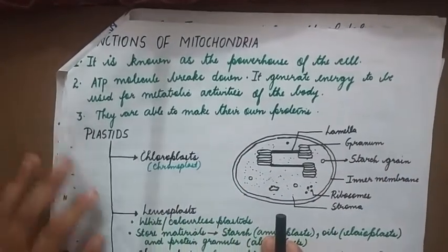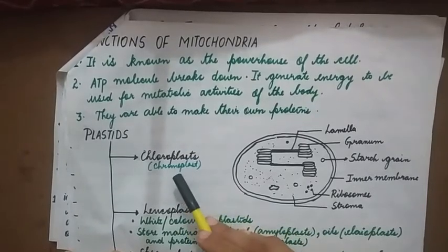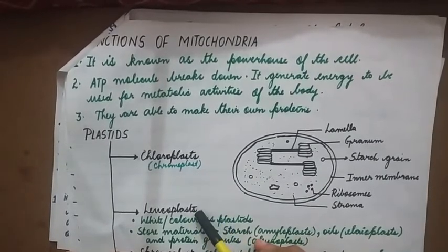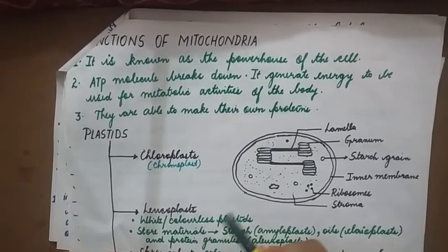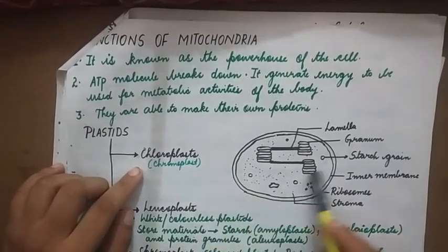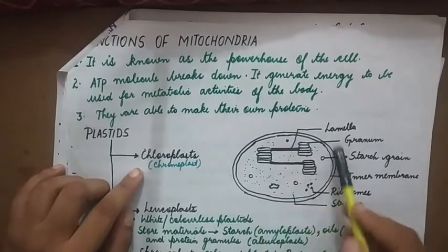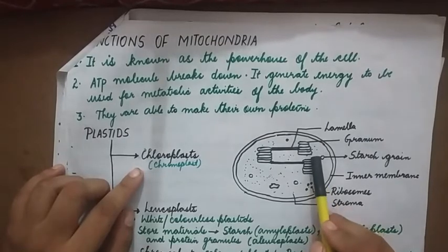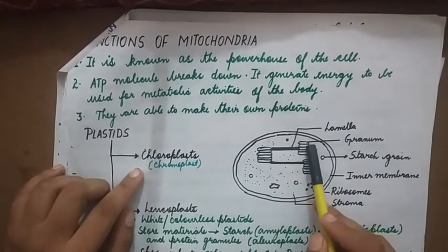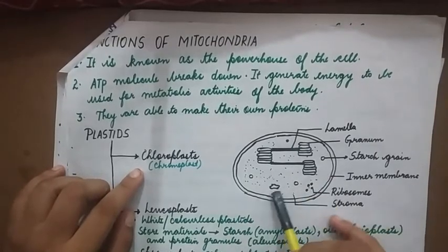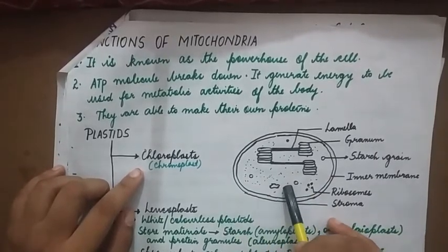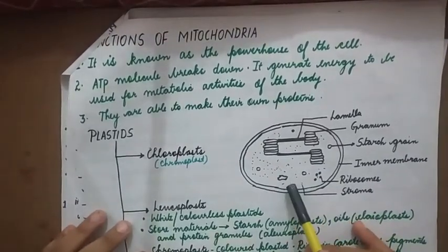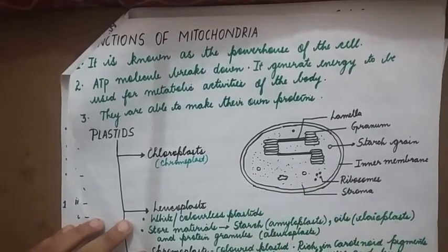Moving on to plastids — we have chloroplast, chromoplast, and leukoplast. Chloroplast is a double membrane structure with the presence of lamella that connects the grana. These coin-like structures are called thylakoids, and each granum is made up of thylakoids. Starch grains are also present. Chloroplasts have DNA and ribosomes and can partially synthesize their own protein. The fluid-like matrix is known as stroma.